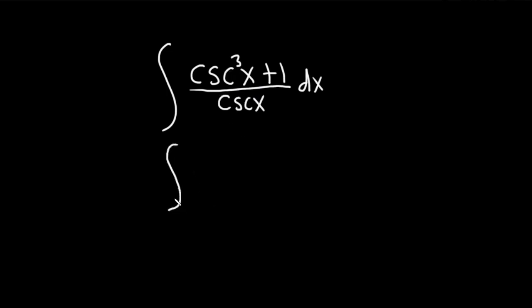So this is the same thing as the integral of cosecant cubed of x over cosecant of x, and then plus 1 over cosecant x.